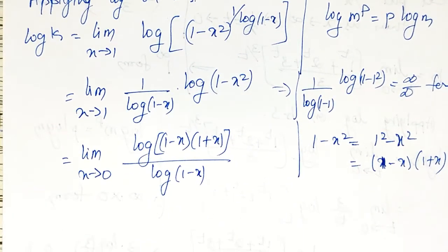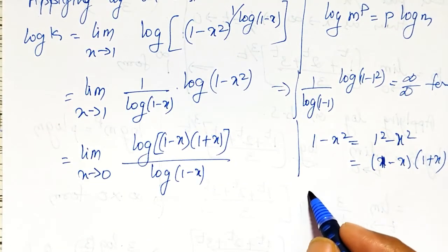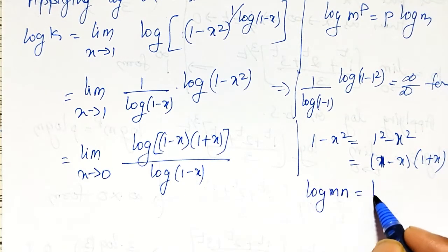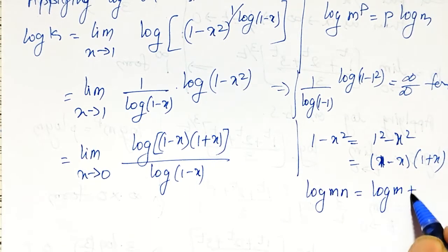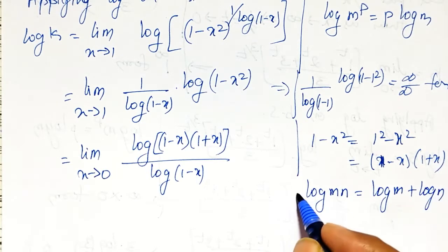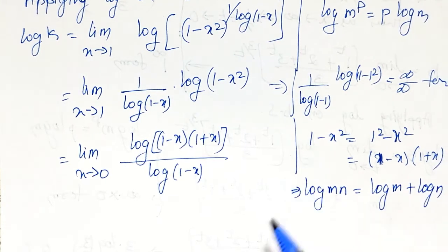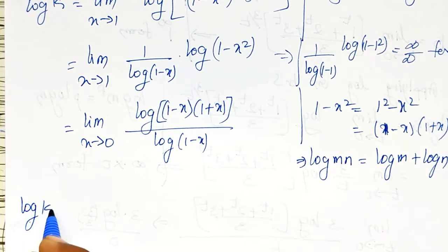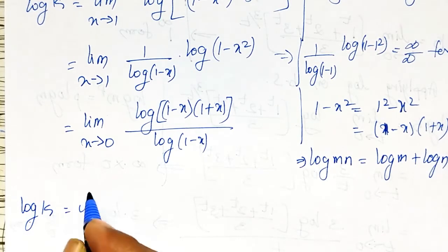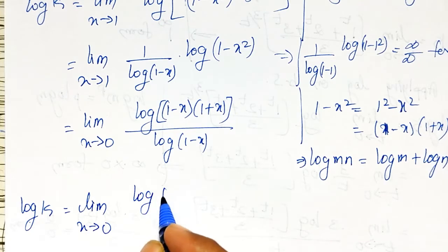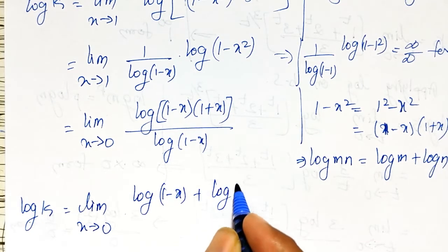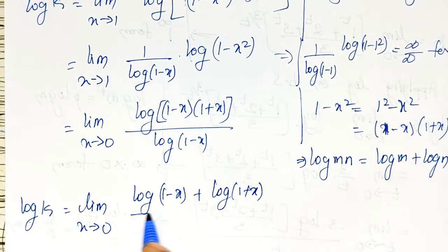Since it is a product, I will use the property of logarithms: log(m times n) equals log m plus log n. So in the numerator I can write log k equal to the limit as x tends to 1 of log(1 minus x squared) expanded using this property.